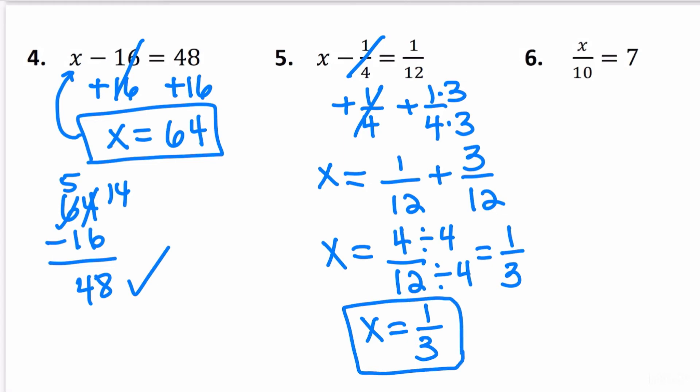For number 6, x divided by 10 is equal to 7. The opposite of division is multiplication. Since I'm dividing by 10, the opposite is to multiply by 10. We're going to multiply by 10, and that cancels it out on the left side of the equal sign. So x is going to equal 70. If we substitute, then 70 divided by 10 is 7.